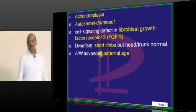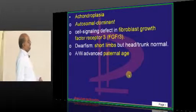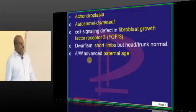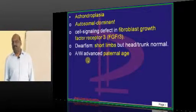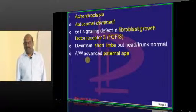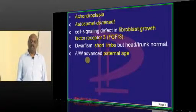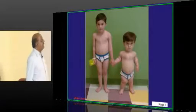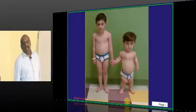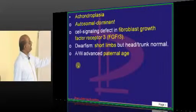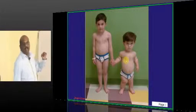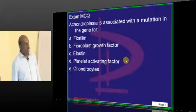Achondroplasia patients typically show dwarfism and short limbs, but their head and trunk are normal. They are also typically associated with advanced parental age — for example, becoming pregnant with a father who is in his 60s or a mother in her 50s. The special observation in achondroplastic patients is short limbs but normal trunk and head — that is the key point to appreciate.